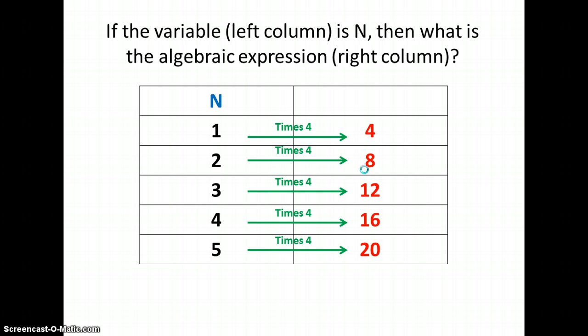So, for my n or h, or whichever letter I want to give my table, for any value of n, I would get 4n to get my column on the right.